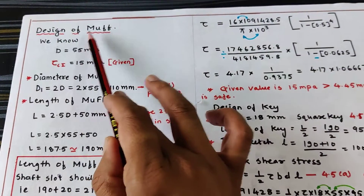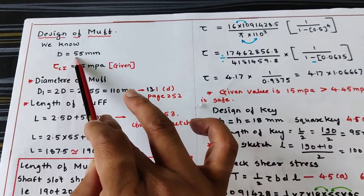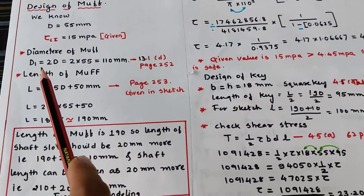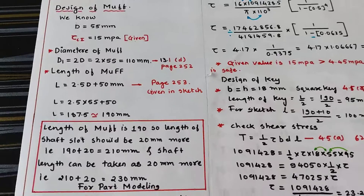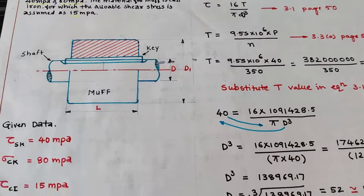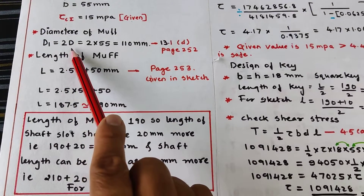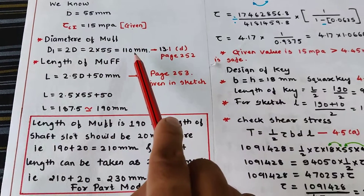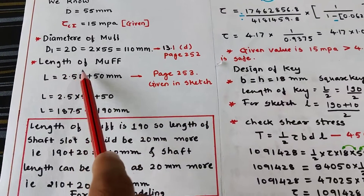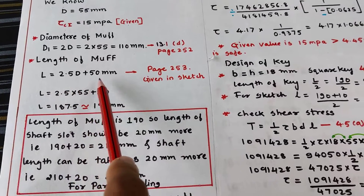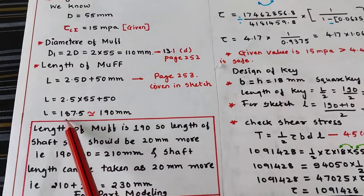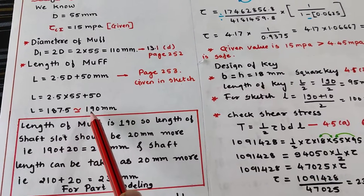The next step is the design of the MUF. With shaft diameter D = 55 mm and cast iron shear stress = 15 MPa, we find D1 and length L. Using formula 13.1 from page 252: D1 = 2D = 2 × 55 = 110 mm. The length of the MUF is given by L = 2.5D + 50 mm (page 253), which gives L = 187.5 mm, rounded to 190 mm.